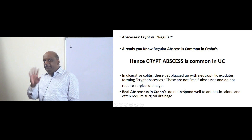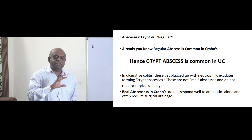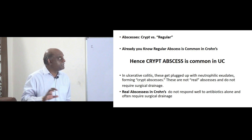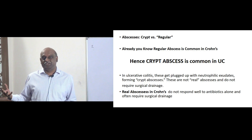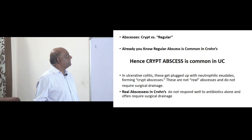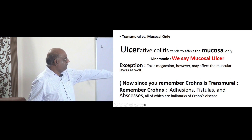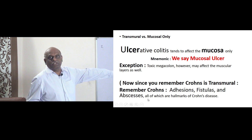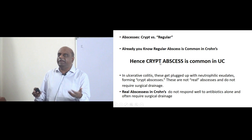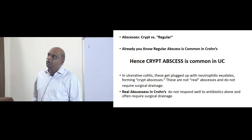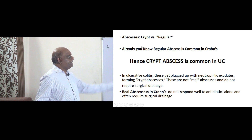Next, the second important difference — how will you remember which, between ulcerative colitis and Crohn's, shows crypt abscesses, and which shows regular abscesses? Already you know that regular abscesses are common in Crohn's. Adhesions, fistulas, and abscesses are common in Crohn's. So regular abscesses are common in Crohn's because it is transmural. Obviously, crypt abscesses are common in ulcerative colitis.